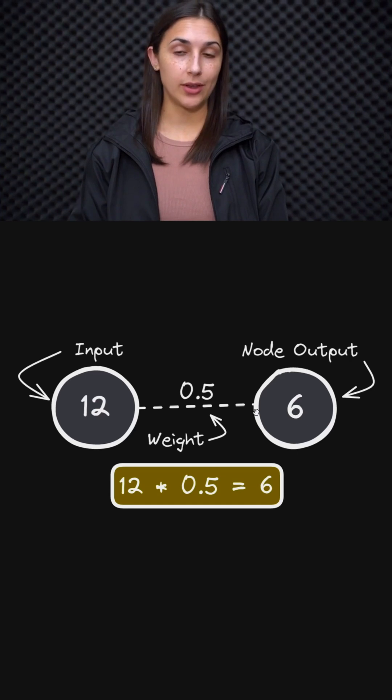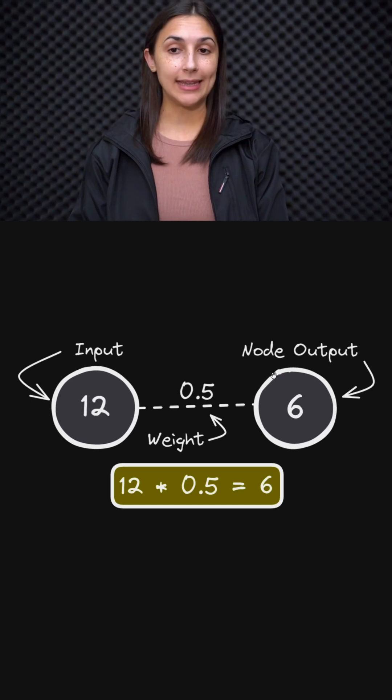Now we're going to assume that this node does not have any bias term at the start. So there's no bias term. And so to calculate the node output value, we simply just multiply our input by our weight. So 12 times 0.5 is equal to 6.